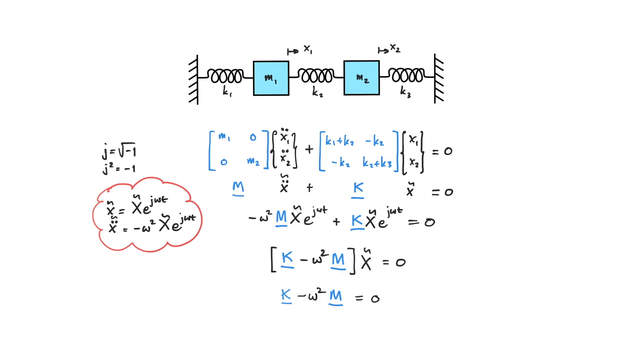So the way to obtain the solution is by using the concept of determinant in matrix. So determinant K minus omega square M equals to zero. The solutions obtained from here are the scalar quantity of omega which we call the eigenvalues or in this case are the natural frequencies of the 2 degrees of freedom system.